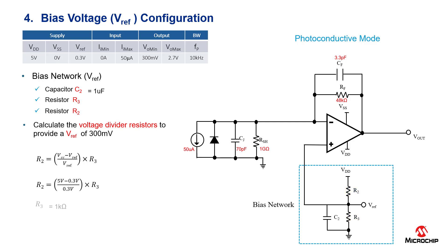By selecting R3 as 1 kilo-ohm and plugging it into the equation, we found that R2 is 16 kilo-ohms. This will give us a 300 millivolt reference voltage that we're going to use to bias up the output.